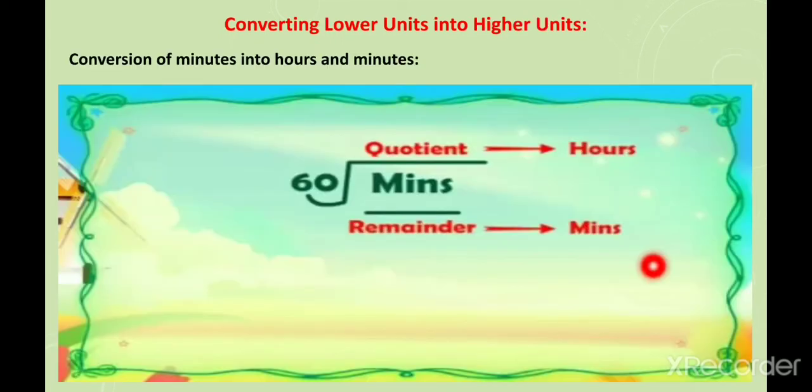Now, converting the lower unit into the higher unit: conversion of minutes into hours and minutes. Here you have to divide by 60. The quotient will be the hours and the remainder will be the minutes. Try to solve these questions.